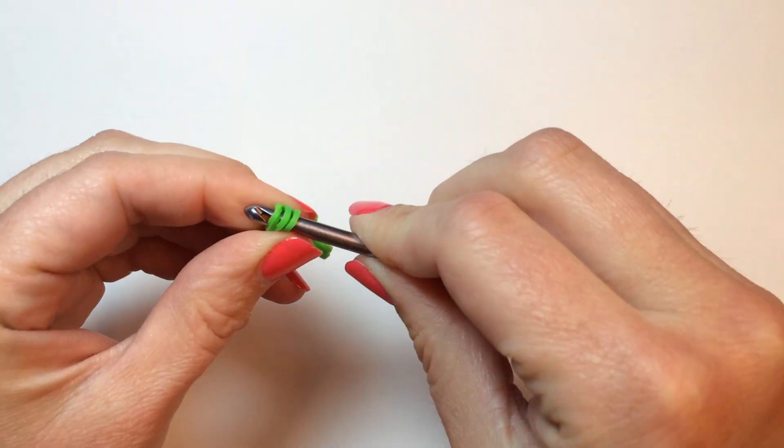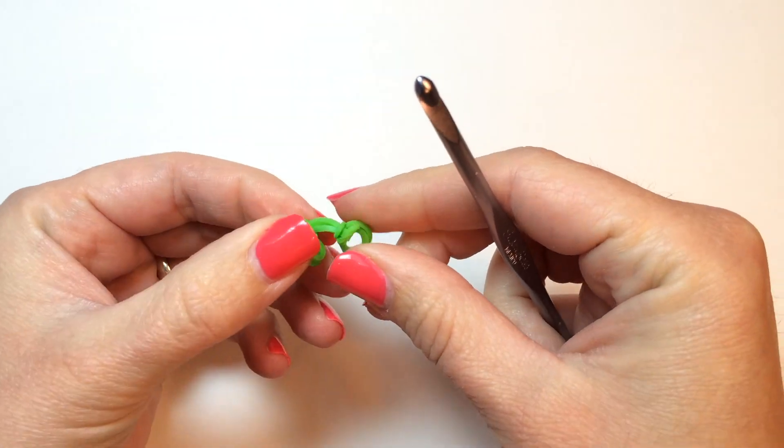Give them a little bit of a tug to even them out to make your leaves look neater.